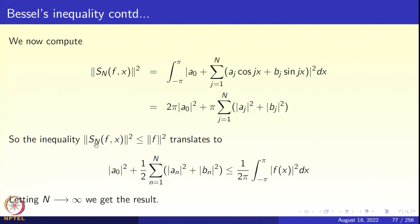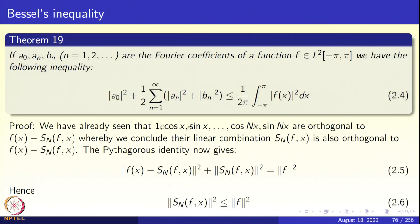The inequality ||Sn(f)||² ≤ ||f||² simply translates to the displayed inequality. Simply allow n to go to infinity and we get the stated result — Bessel's inequality has been established. The idea is exactly the same as that of the least square approximation, namely Pythagoras's identity.